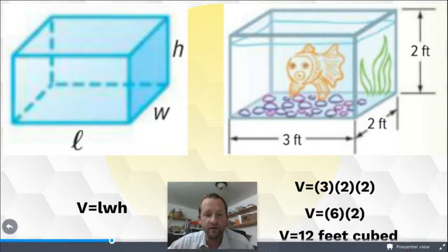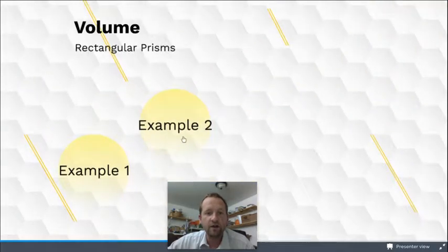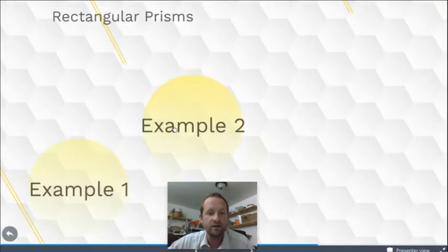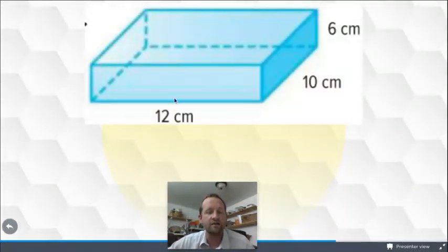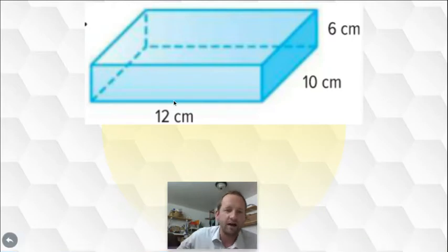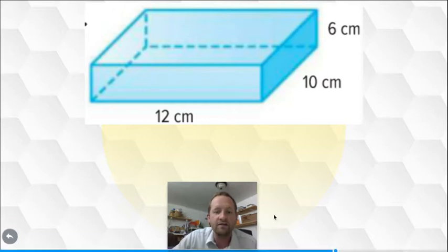Let's go look at another one that I've got for you here. Example two. Here is our shape. There it is. So, here's our rectangular prism. It's just a box. We've got a length of 12 centimeters, a width of 10 centimeters, and a height of 6 centimeters.